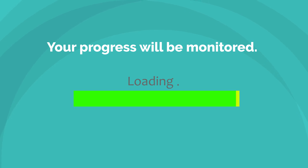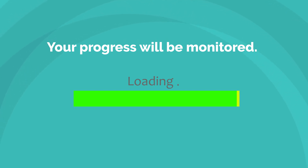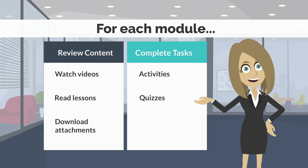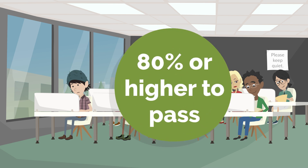Your progress will be monitored. You must complete each component of Module 1 before you can move to Module 2, and this pattern continues for all modules in the orientation. In each module there is a quiz and sometimes an activity that you will be required to complete in order to successfully move to the next module. You need to score 80% or higher to pass the quizzes at the end of each module.